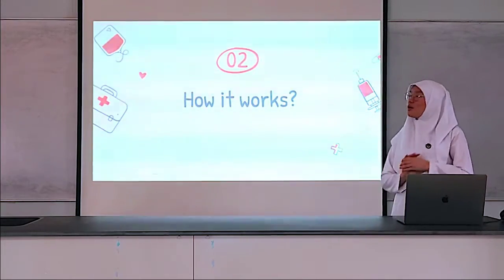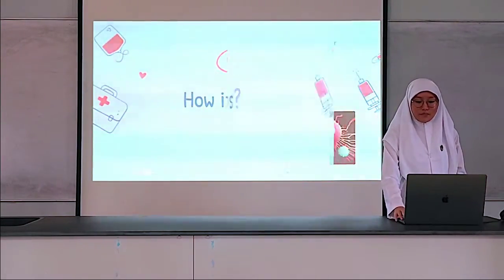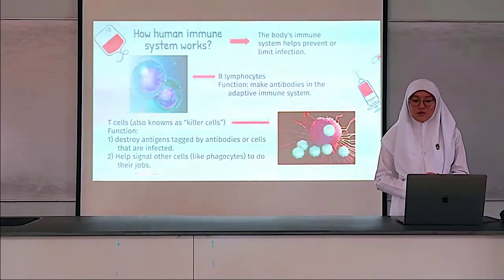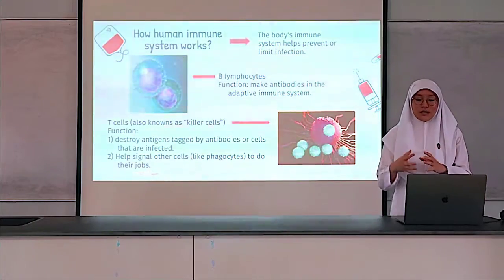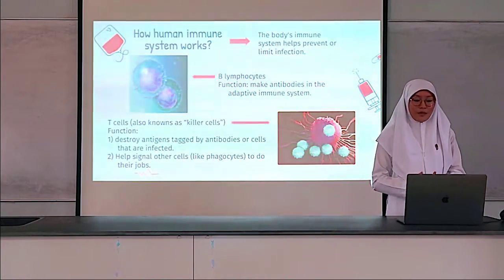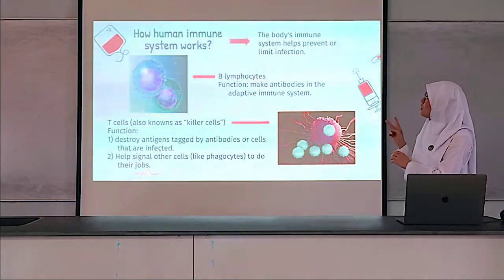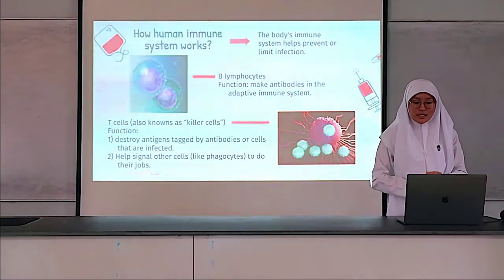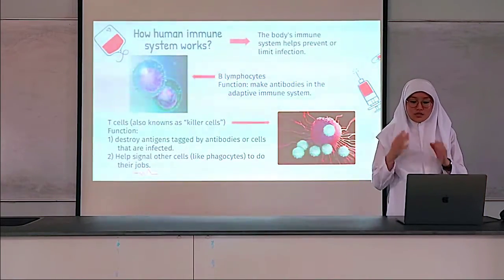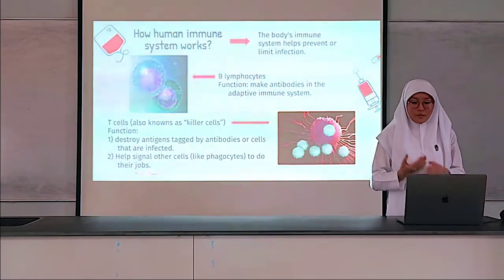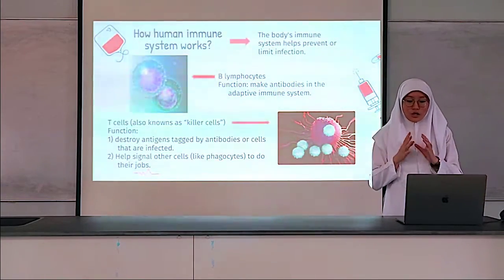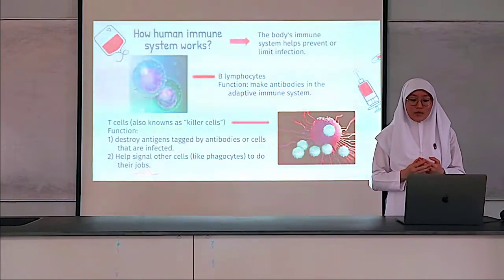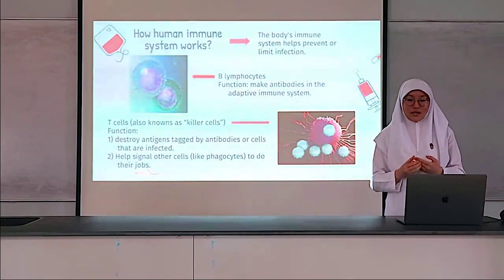So how does our human immune system actually work? When the body senses a foreign substance, also known as an antigen, the immune system works to recognize the antigen and get rid of it. That is why B lymphocytes and T cells come in. B lymphocytes are trained to make antibodies, and these proteins lock onto specific antigens.